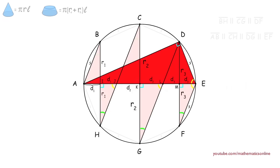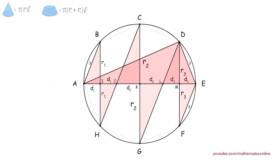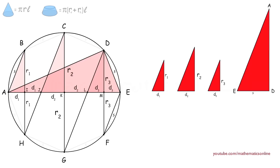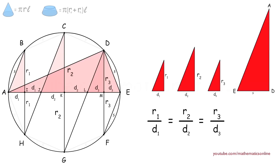Finally, we will look at this last triangle, and it is also similar because it has two of the same angles shared by all the other similar triangles. Since all these triangles are similar, we can establish an important relationship between them. Specifically, we will show that the corresponding sides are all in the same proportion. Therefore, R1 over D1 is equal to R2 over D2, which is equal to R3 over D3, which is equal to line AD over S.